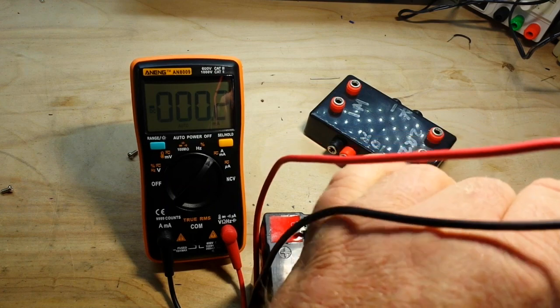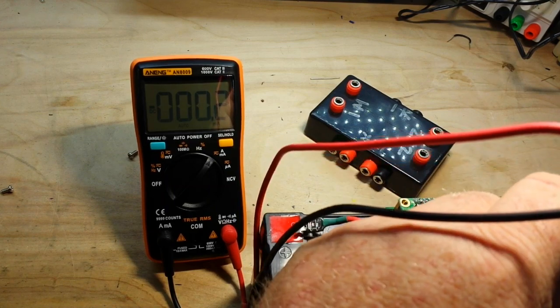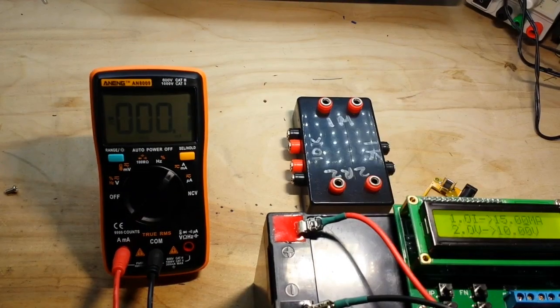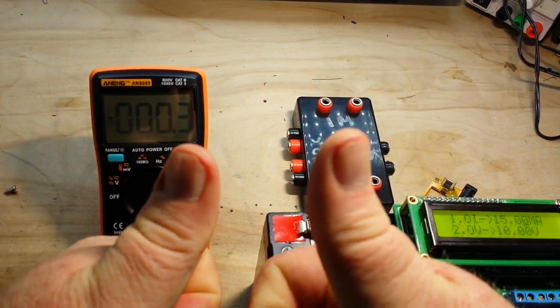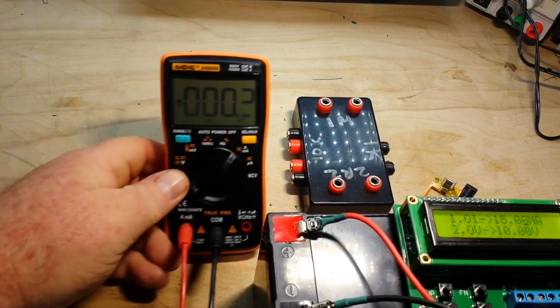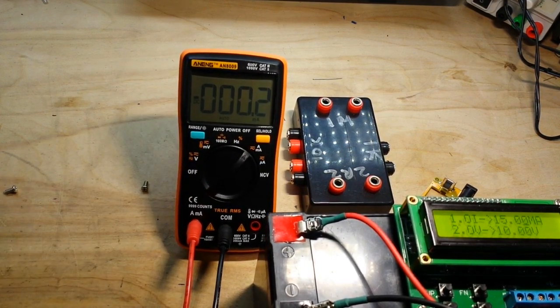We should be getting milliamps. Alright, we'll come back to that. What has two thumbs and is an ass or is an idiot? This guy. Had the wires in the wrong place.